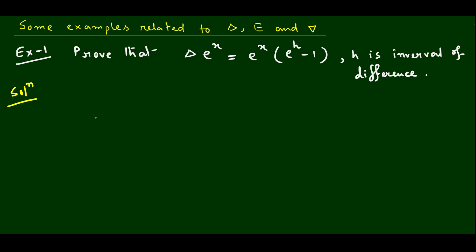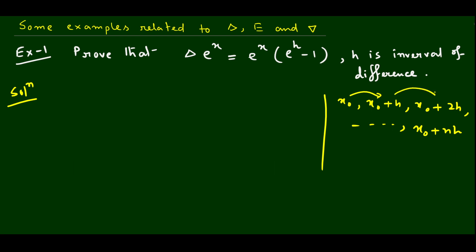Let's get started. In problem number one, we have the operator delta. We need to prove that delta e to the power x equals e to the power x times (e to the power h minus 1), where h is the interval of difference. Recall that for arguments x₀, x₀+h, x₀+2h, and so on, the increment in each step is h — this is called the interval of difference. The formula is: delta f(x) = f(x+h) minus f(x).